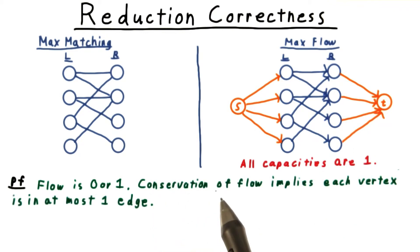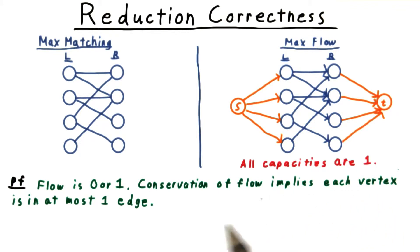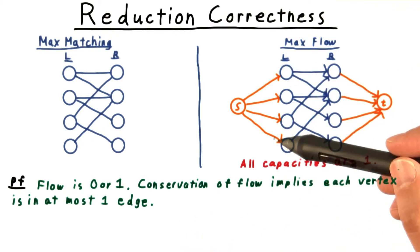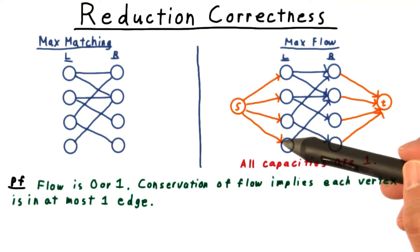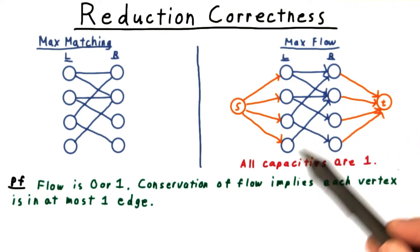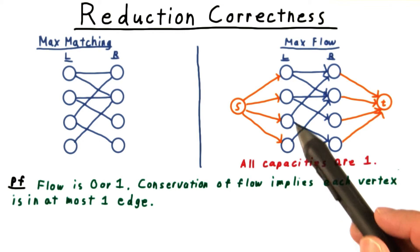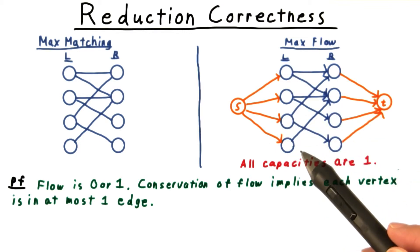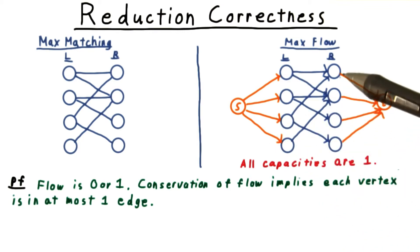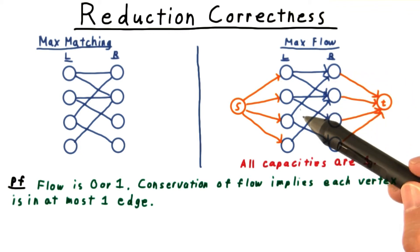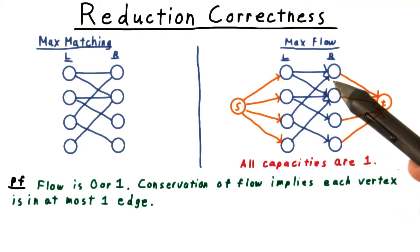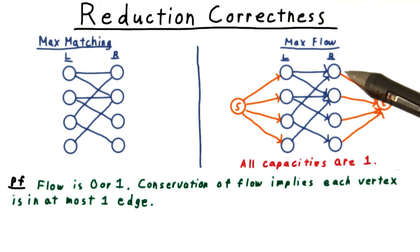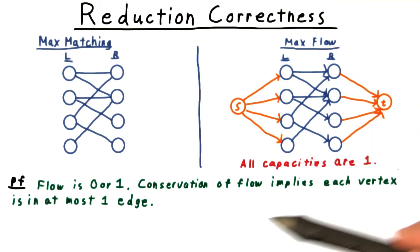The conservation of flow then implies that each vertex is in at most one edge that we return. On the left-hand side, we only have one unit of capacity going in, so we can't have more than one unit of capacity going out. So each vertex on the left-hand side will be included in at most one edge. And similarly for the right-hand side, we have at most one unit of flow going out, so we can have at most one unit of flow going in, which implies that every vertex on the right will be involved in at most one matched edge in our output.